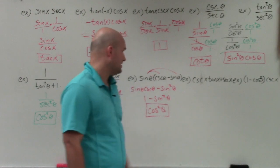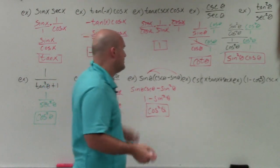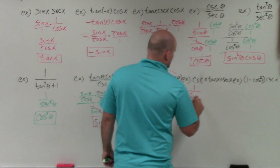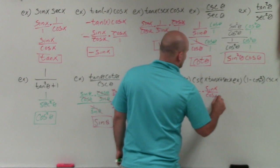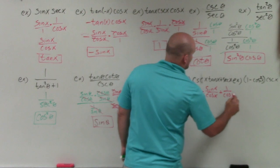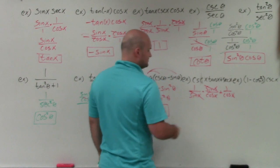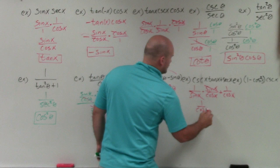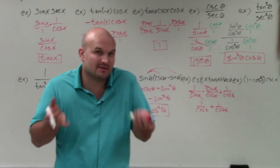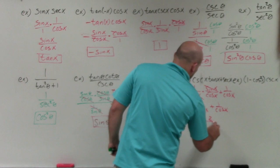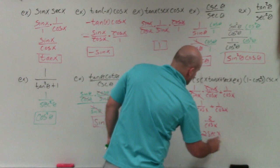Now I have cosecant of x plus tangent of x plus secant of x as a numerator. Since they're different trig functions, I rewrite in terms of sines and cosines: 1 over sine of x, plus sine of x over cosine of x, plus 1 over cosine of x. Multiplying out, I get 1 over cosine of x plus 1 over cosine of x. These fractions share the same denominator, so combining gives 2 over cosine of x, which is the same as 2 times secant of x.